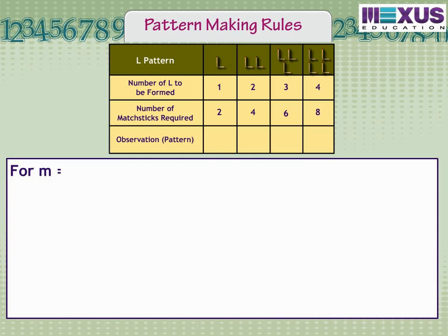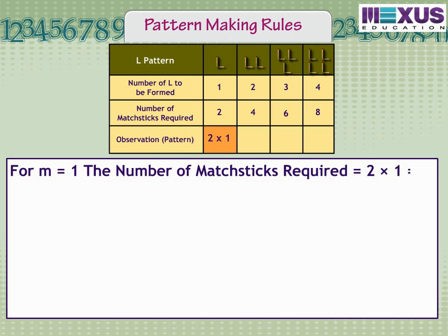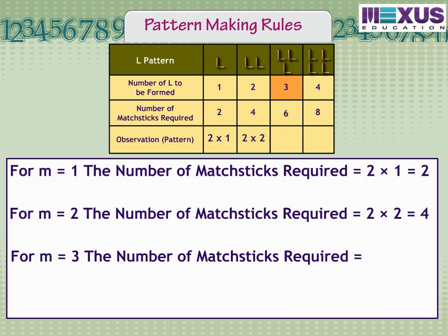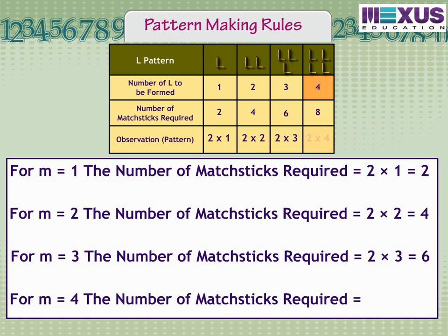For M equal to 1, the number of matchsticks required is equal to two times one, equal to two. For M equal to 2, the number of matchsticks required is equal to two times two, equal to four. For M equal to 4, the number of matchsticks required is equal to two times four, equal to eight. These numbers agree with those from the table.